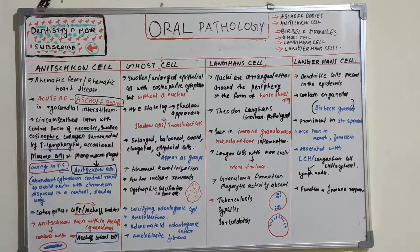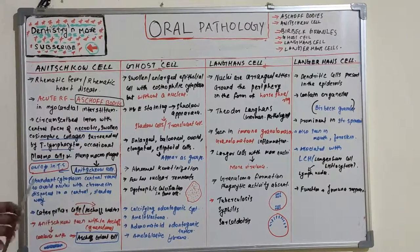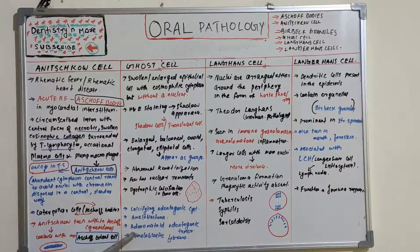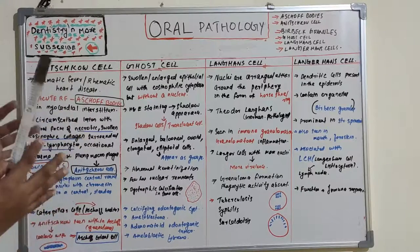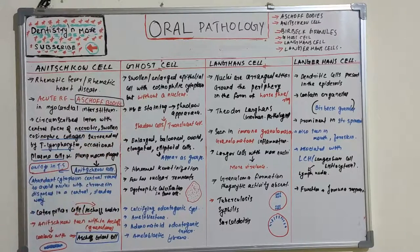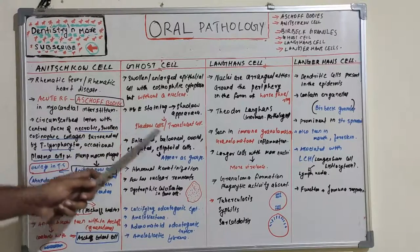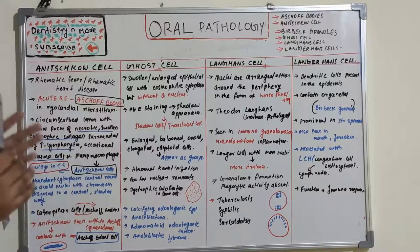Now let's move on to the ghost cell. Ghost cells are commonly seen in calcifying odontogenic cyst, ameloblastoma, adenomatoid odontogenic tumor, and ameloblastic fibroma. They are basically swollen, enlarged epithelial cells with eosinophilic cytoplasm but without a nucleus. In H&E staining, they look like shadow cells or translucent cells.